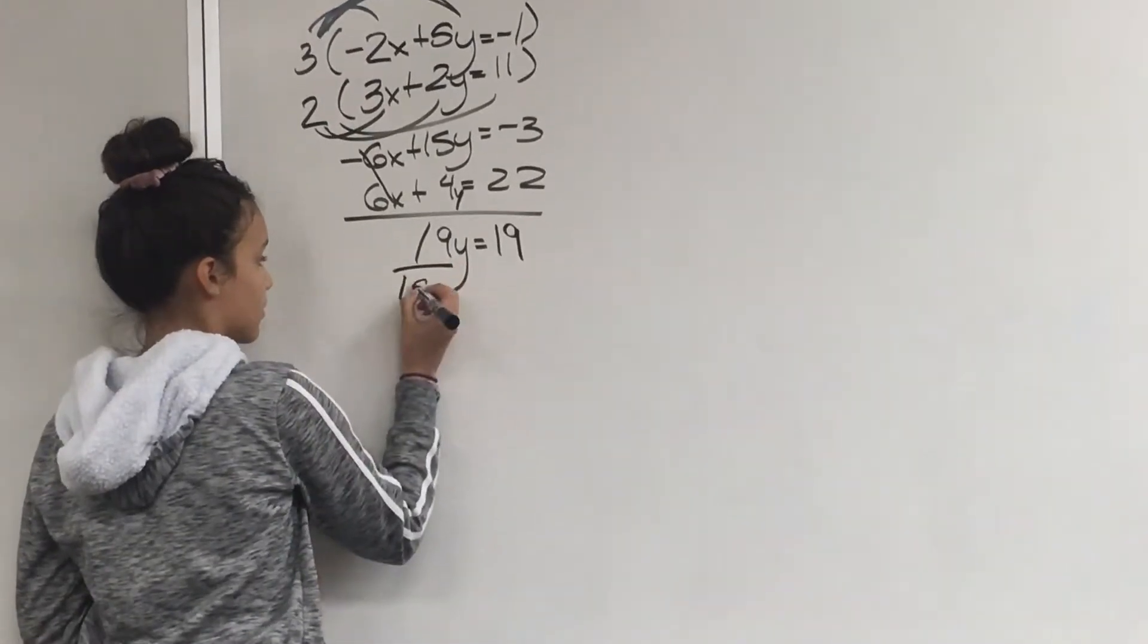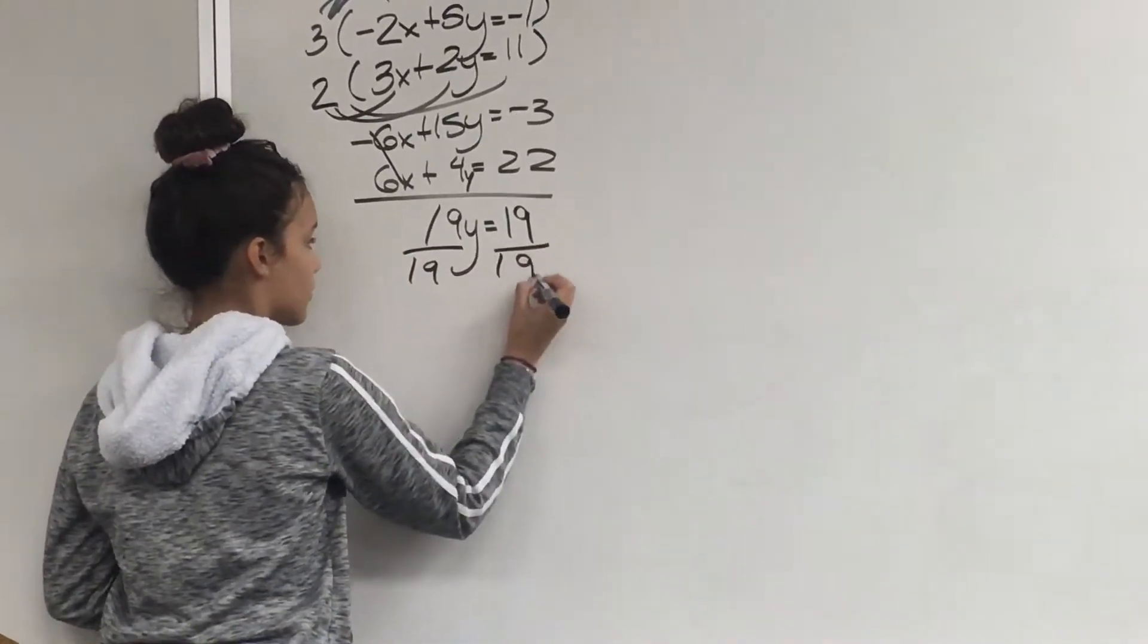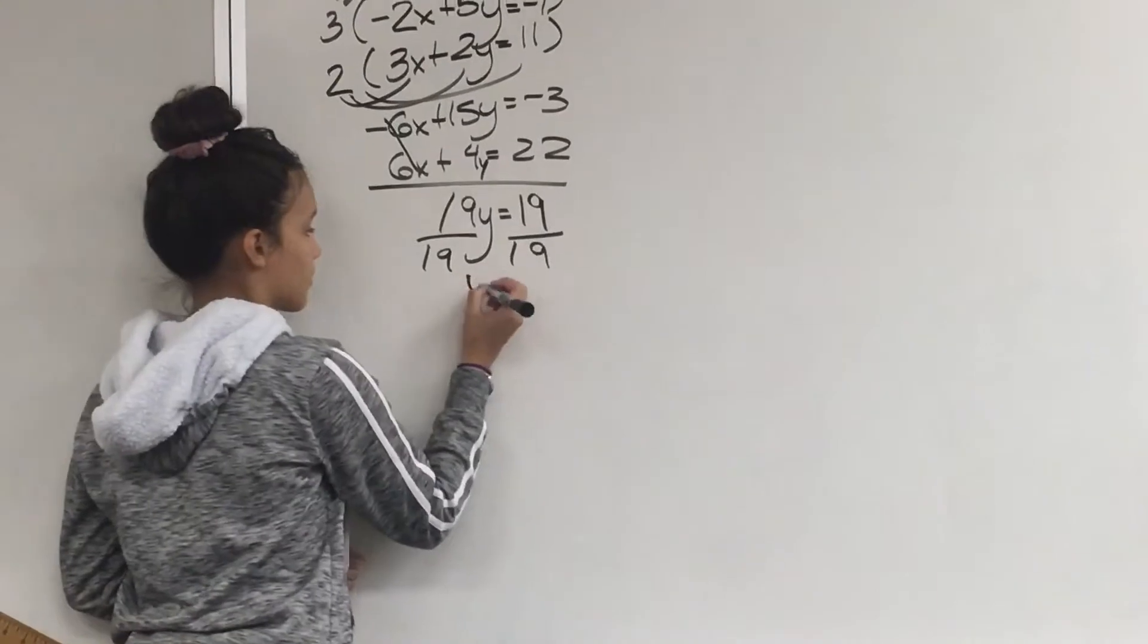Then divide both sides by 19 to get the y by itself. Then you would get y equals 1.